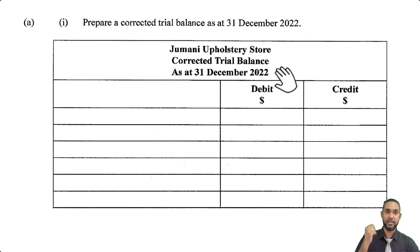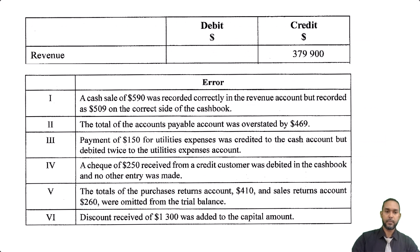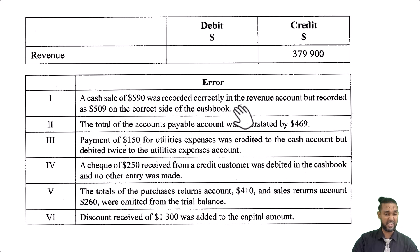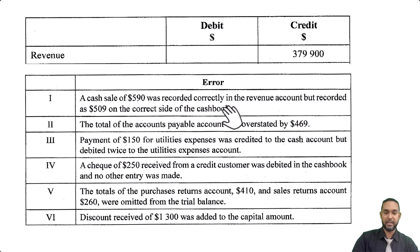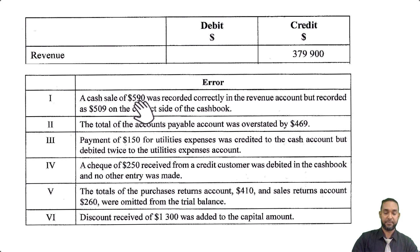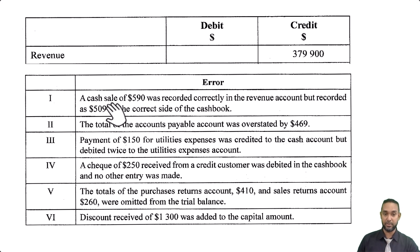Error one: a cash sale of $590 was recorded correctly in the revenue account, but recorded as $509 on the correct side of the cash account. So $590 was the correct amount and was credited to revenue fine, but cash was only debited $509. That's an error of transposition — the digits were mixed up. It's $81 less than the correct amount, so we have to add $81 to cash.